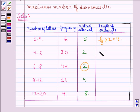Similarly here we will have 30 by 2 into 2 is equal to 30 only. Here also we will have 44 as it is. Here we will have 16 divided by 4 into 2 that is equal to 8 and here we have 4 divided by 8 into 2 that is equal to 1.